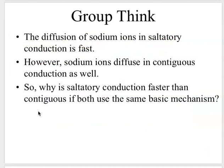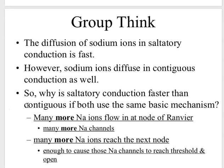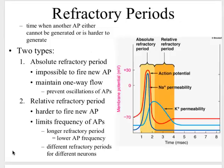A group think question asks: sodium ion diffusion in saltatory conduction is fast, but sodium ions also diffuse in contiguous conduction — so why is saltatory conduction faster? The answer is that at the nodes there are lots and lots of ions because there are lots and lots of sodium channels, which allows them to switch through the membrane much quicker than in contiguous conduction.